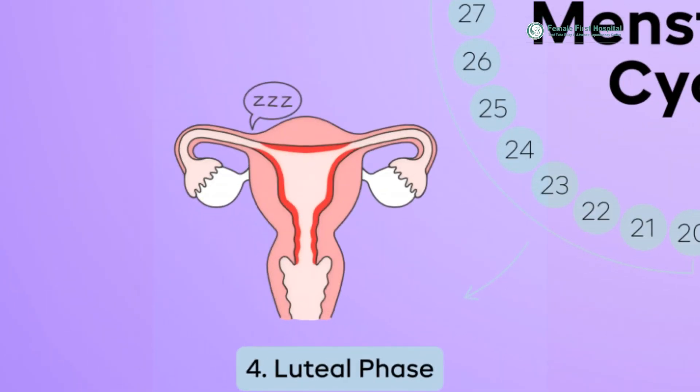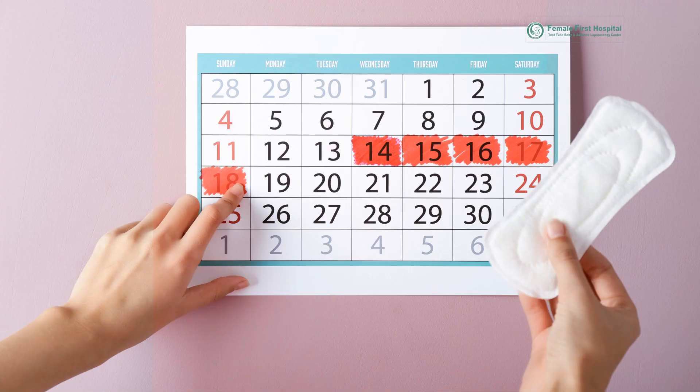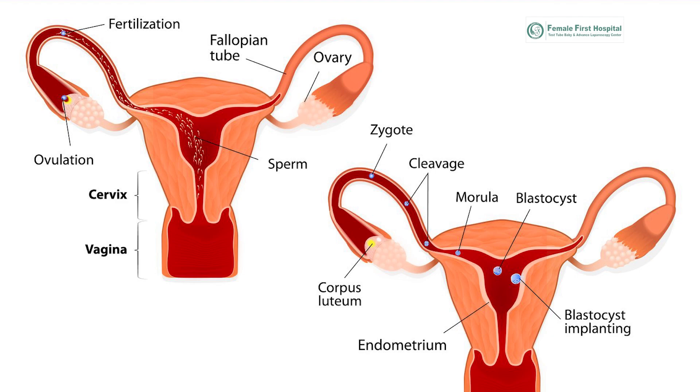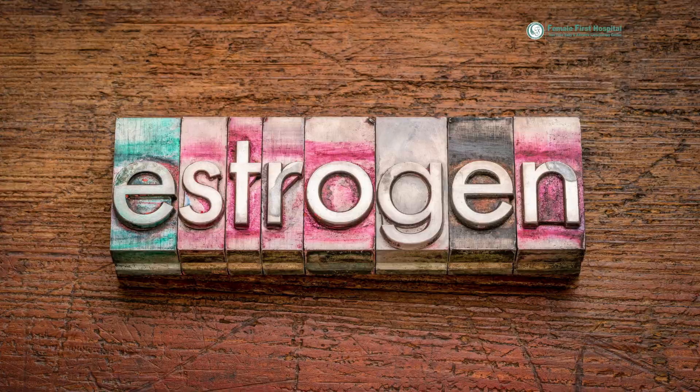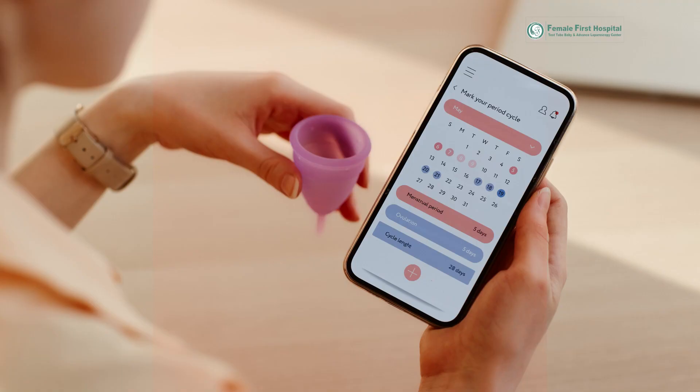The fourth is the luteal phase, from day 15 to day 28. After ovulation, the ruptured follicle transforms into a structure called the corpus luteum, which secretes progesterone and some estrogen. These hormones are essential to prepare the uterine lining for implantation of a fertilized egg and to help maintain pregnancy if conception occurs.